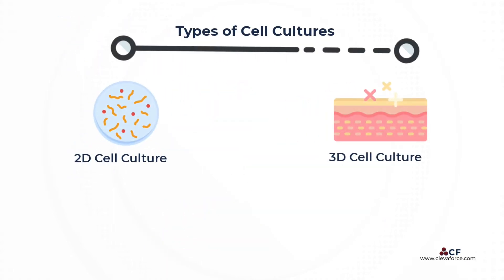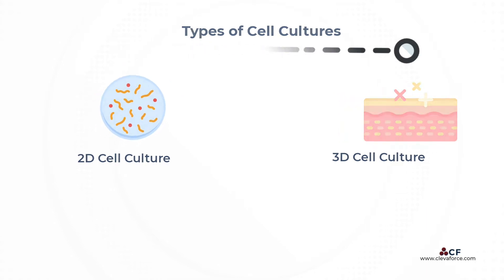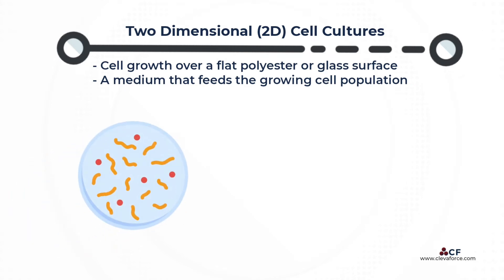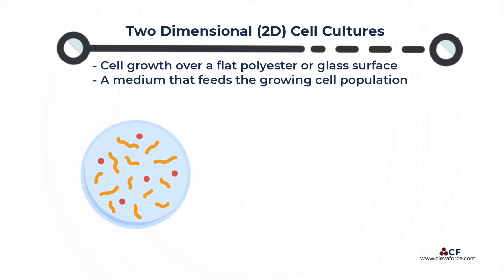Cell cultures can be two-dimensional or three-dimensional. A two-dimensional, 2D culture is a single-layer system that allows cell growth over a flat polyester or glass surface with a medium that feeds the growing cell population.